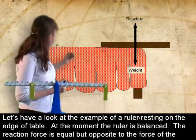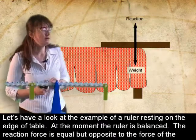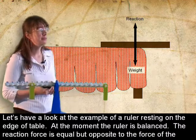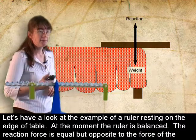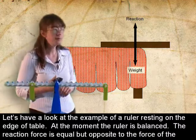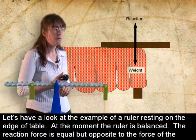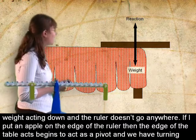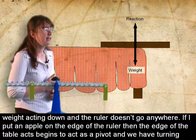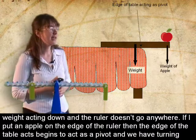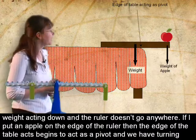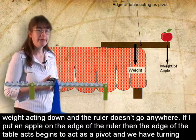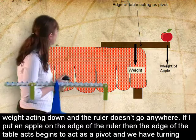Let's have a look at the example of a ruler resting on the edge of a table. At the moment, the ruler is balanced. The reaction force is equal but opposite to the force of the weight acting down, and the ruler doesn't go anywhere. If I put an apple on the edge of the ruler, then the edge of the table begins to act as a pivot, and we have turning forces.